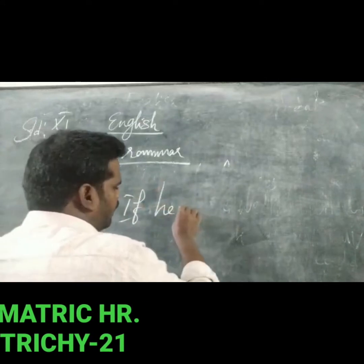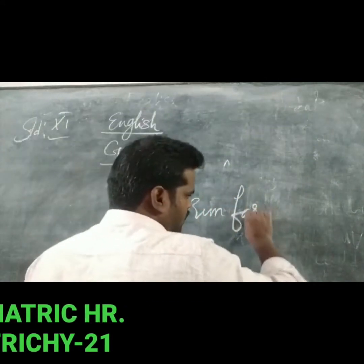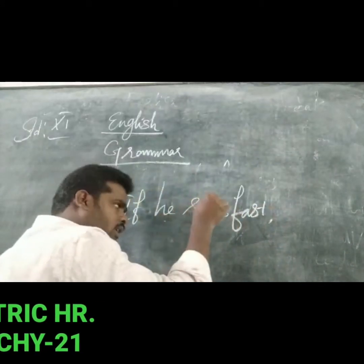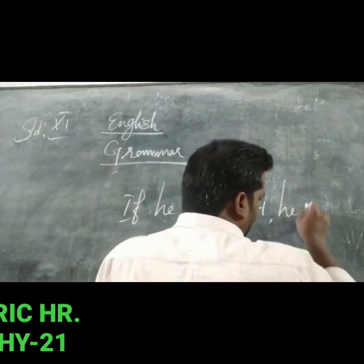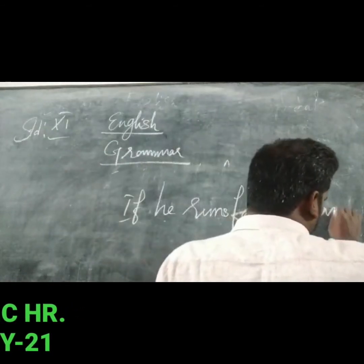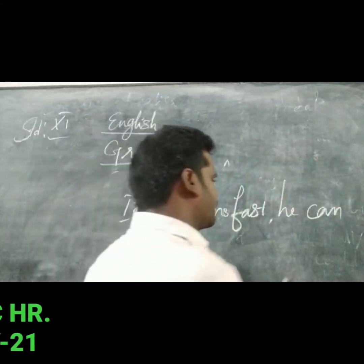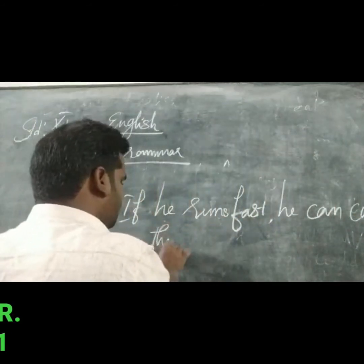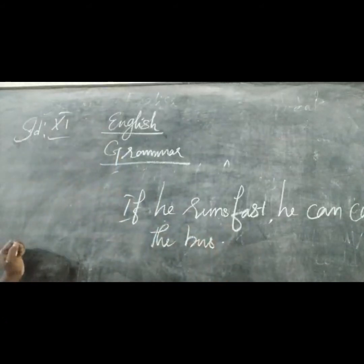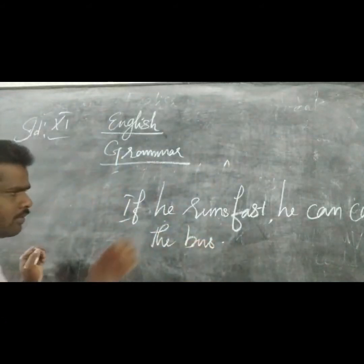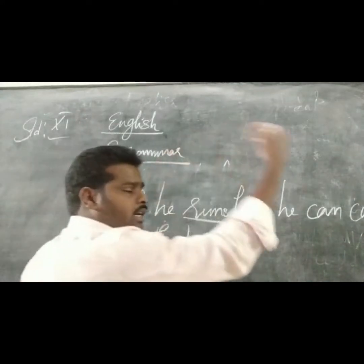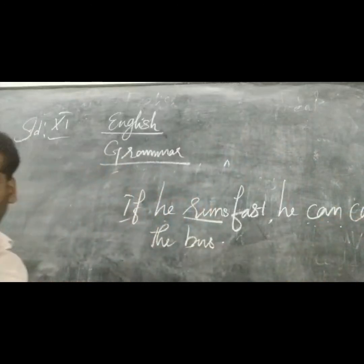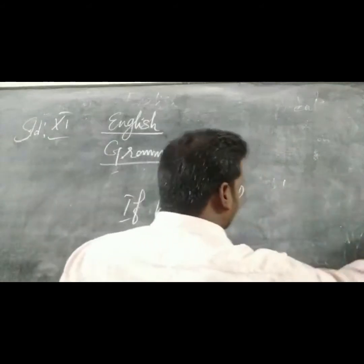If he runs fast — 'runs' because the subject is third person singular — he can catch the bus. So the condition part is present tense, and the result part is future level with can plus V1.